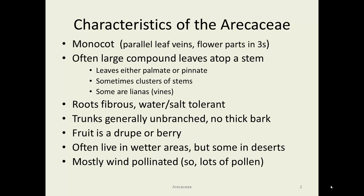Some characteristics of the Arecaceae: they are monocots. So we expect the parallel leaf veins, the flower parts in three, and the stem is not going to differentiate into a thick bark or anything. Often these are large compound leaves on top of a single stem. The leaves are either palmate or pinnate. Sometimes there are clusters of stems, but the trees don't branch like an oak tree or some other woody dicot tree, nor do they have a very thick bark.